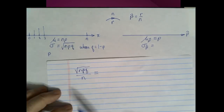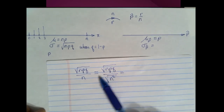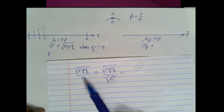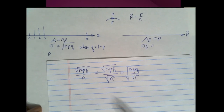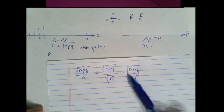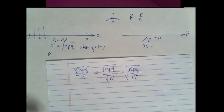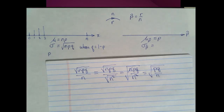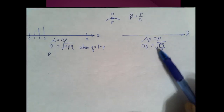To show this algebraically: the square root of n times p times q divided by n equals the square root of n times p times q divided by the square root of n squared, since the square root of n squared equals n. Using the property of square roots in fractions, this becomes the square root of (n times p times q) divided by n squared. The n on top cancels one n on the bottom, leaving the square root of p times q divided by n.